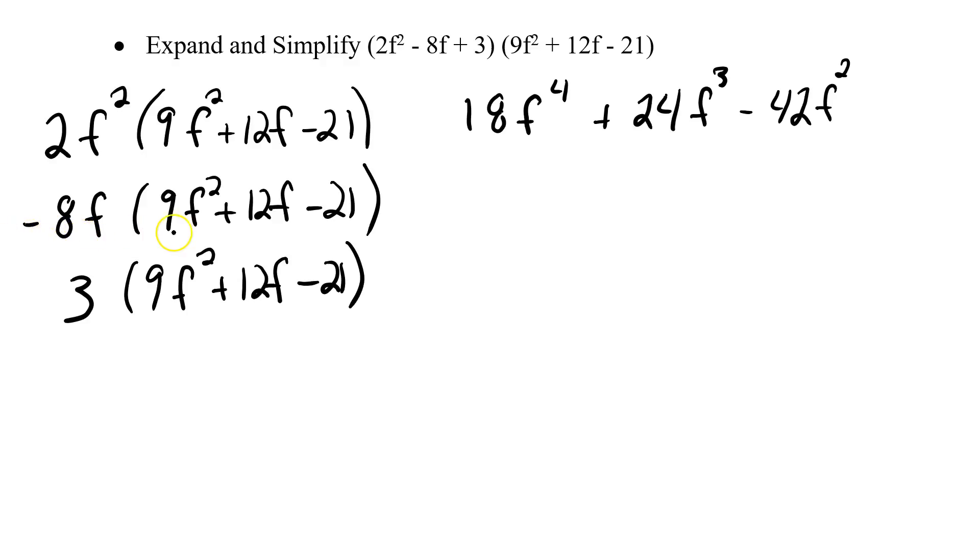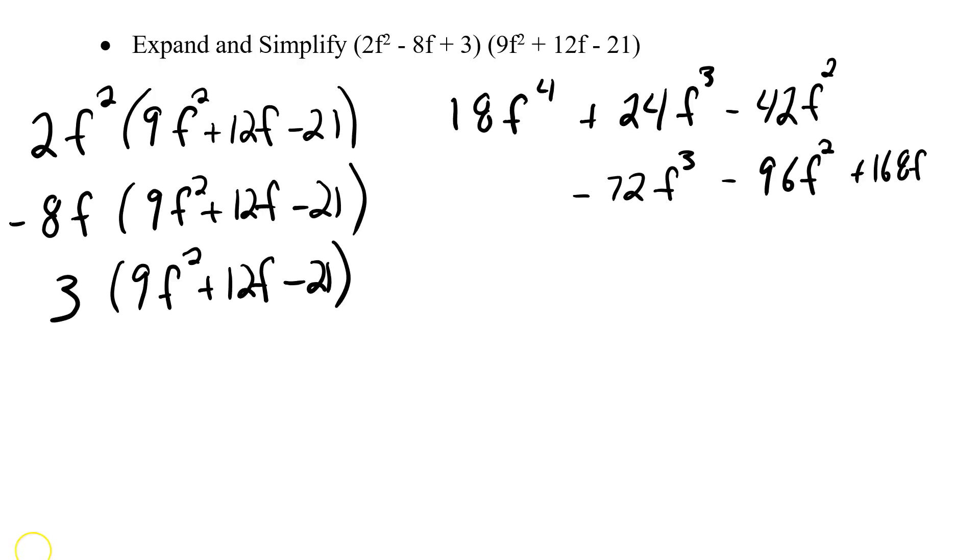Okay, my next one. Negative 8f times 9f squared, that's going to give me negative 72f to the third. So I'm not going to write it here, I'll throw it here. Negative 72f to the third. Negative 8f times 12f, that's negative 96f squared. And then negative 8f times negative 21 gives me positive 168f.